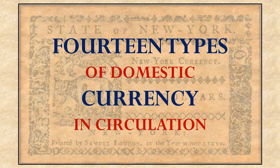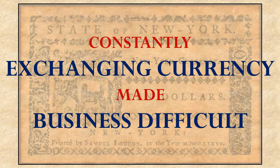What's the problem with all these different kinds of money being in use at the same time? In order to conduct business with somebody who might have a different kind of money than you, you would have to exchange the currency and figure out how much—for example, a dollar from one state would be worth in the dollars of another state. Having to go through those difficult calculations all the time just to make a simple trade makes doing business very difficult.